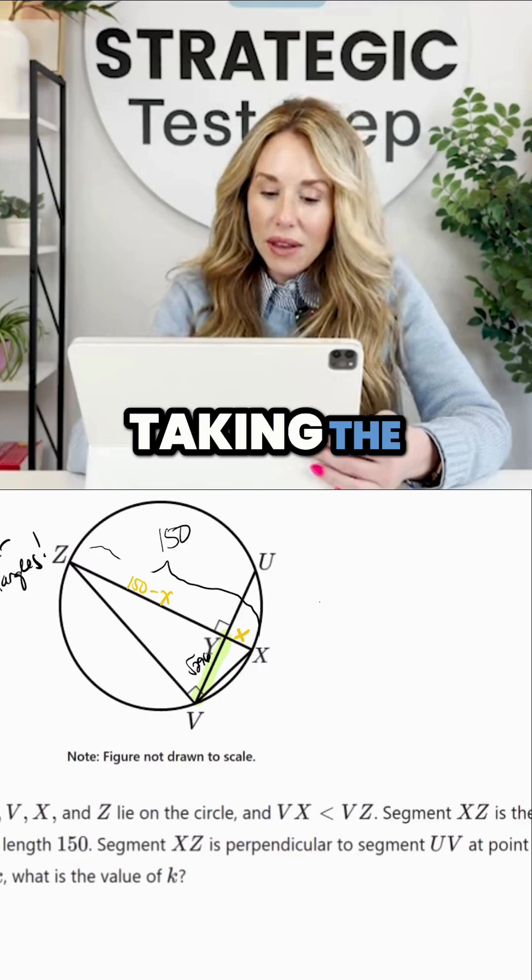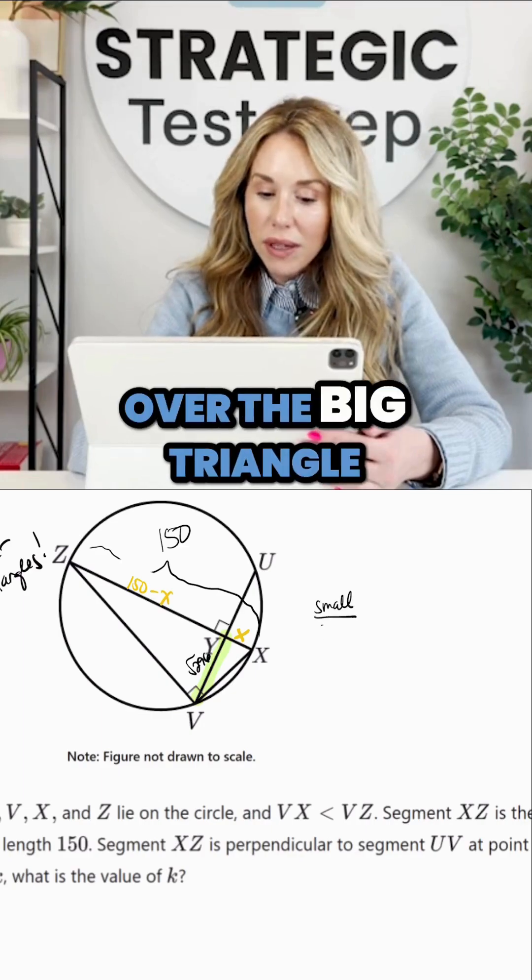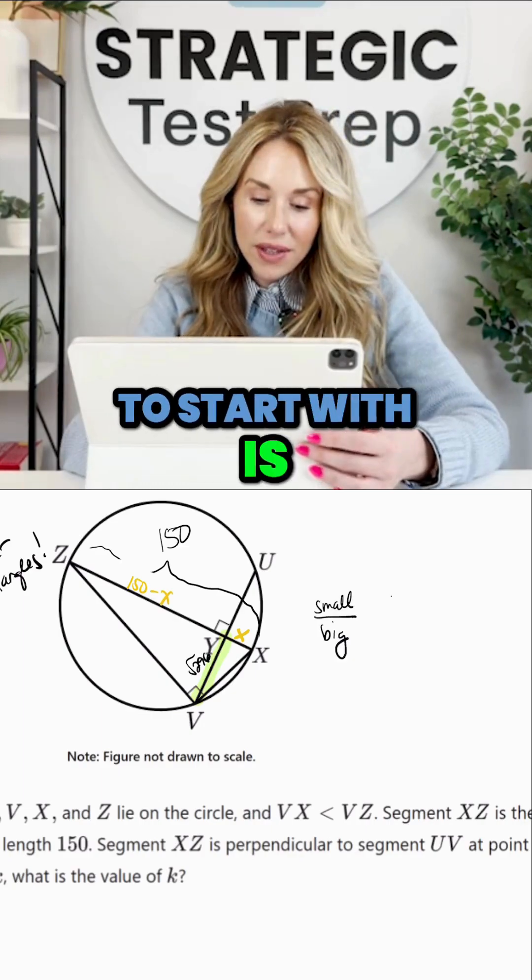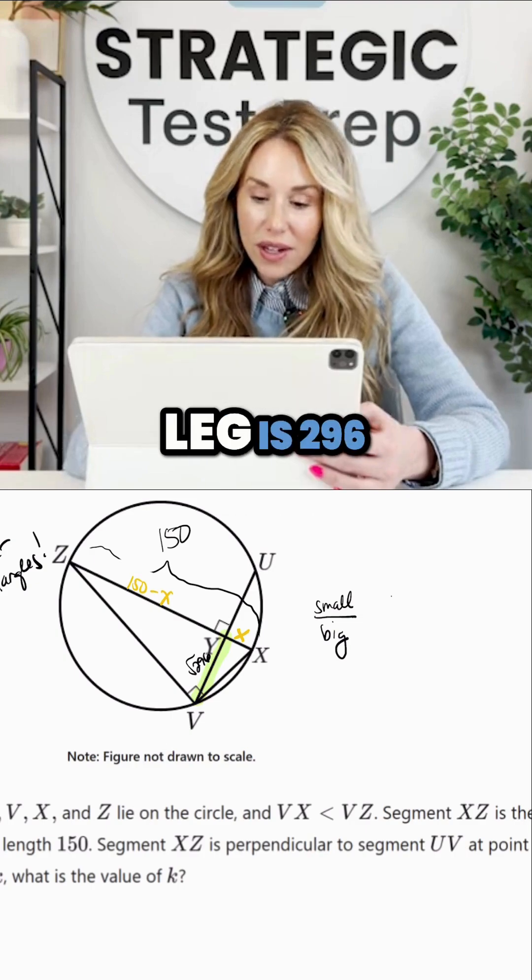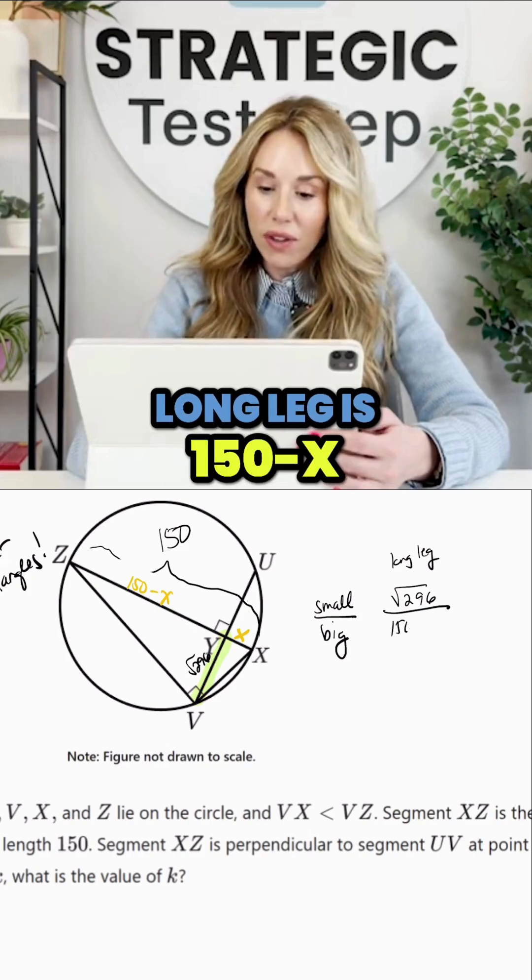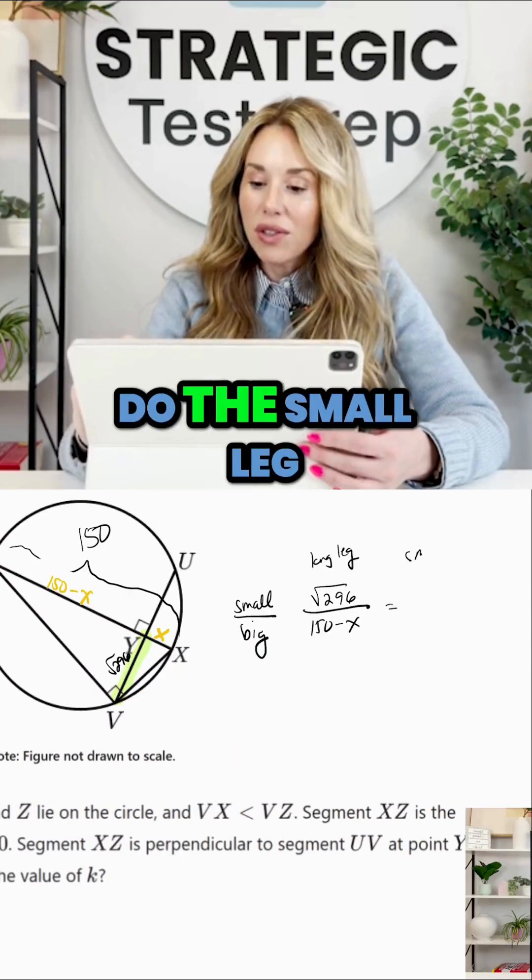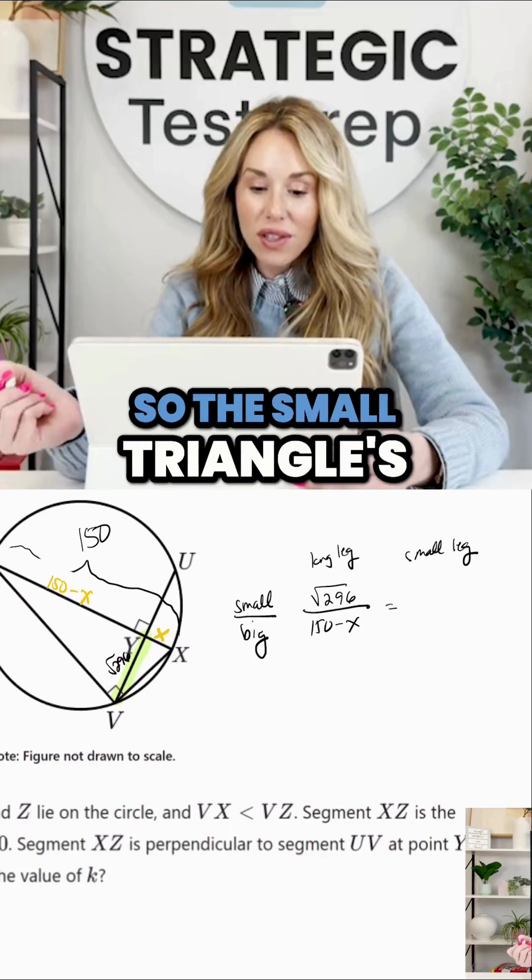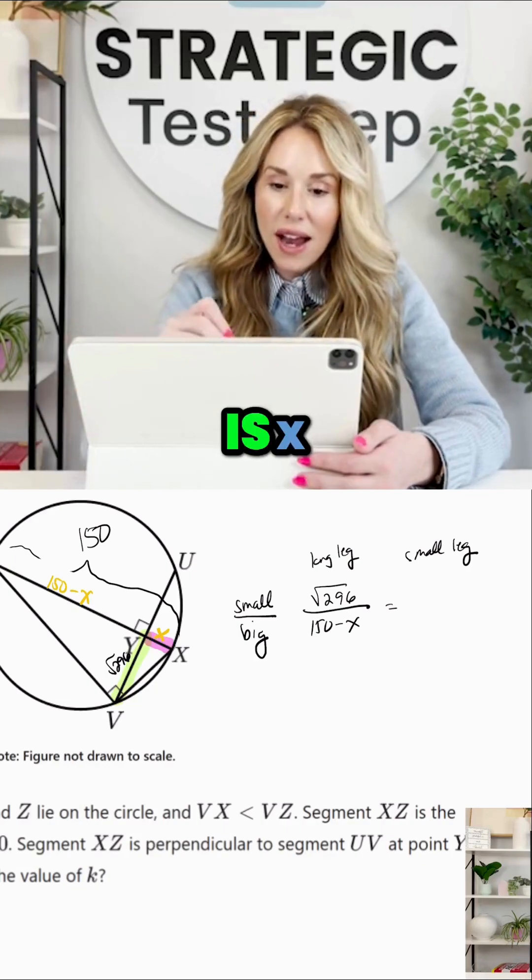So we're going to basically be taking the small triangle over the big triangle. And what I'm going to start with is the small triangle's long leg is 296. So we're going to put the long leg first. The big triangle's long leg is 150 minus X. Then we're going to do the small leg. So the small triangle's small leg, which is right here, is X.